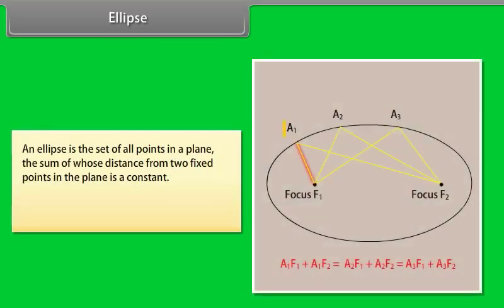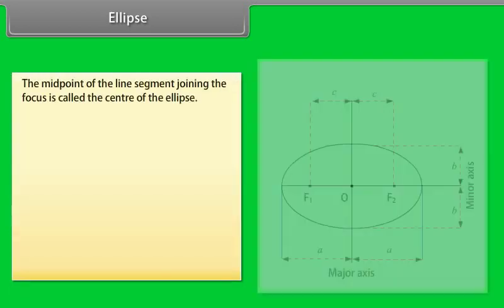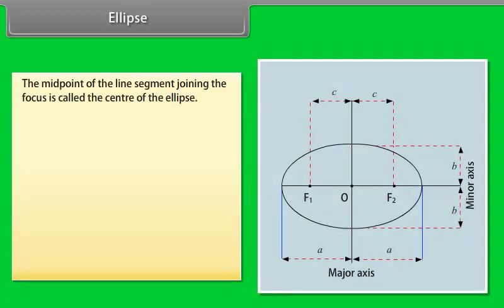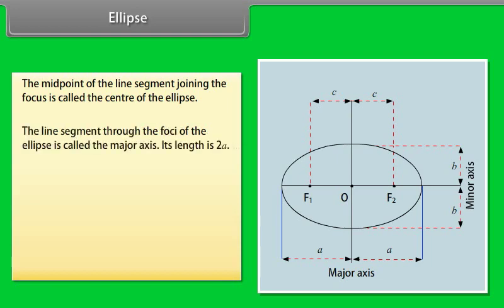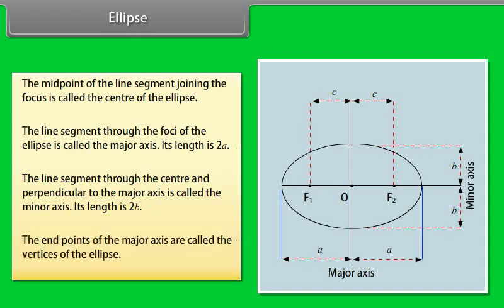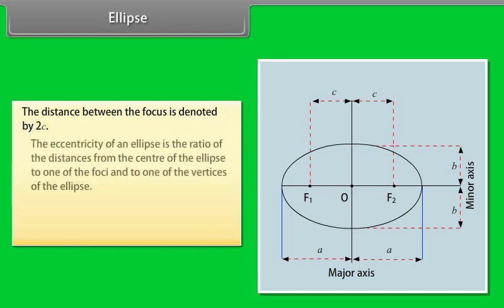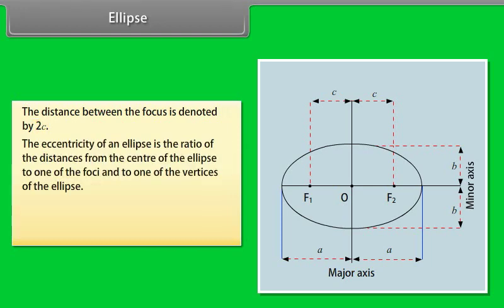Ellipse. An ellipse is the set of all points in a plane, the sum of whose distances from two fixed points in the plane is a constant. The two fixed points are called the foci of the ellipse. The midpoint of the line segment joining the foci is called the center of the ellipse. The line segment through the foci is called the major axis, with length 2a. The line segment through the center perpendicular to the major axis is called the minor axis, with length 2b. The endpoints of the major axis are called the vertices. The distance between the foci is 2c. The eccentricity is E = c/a.